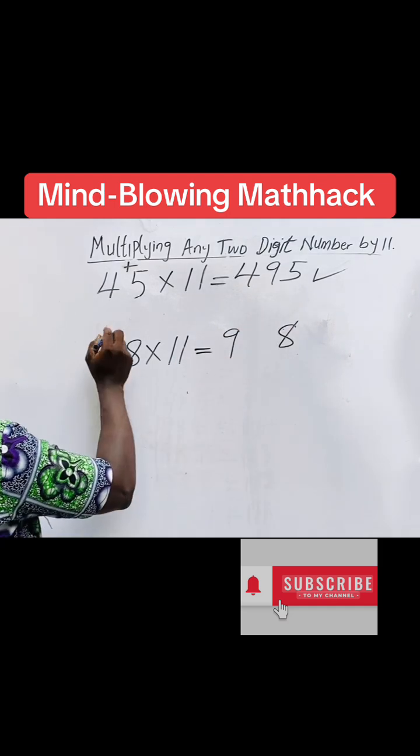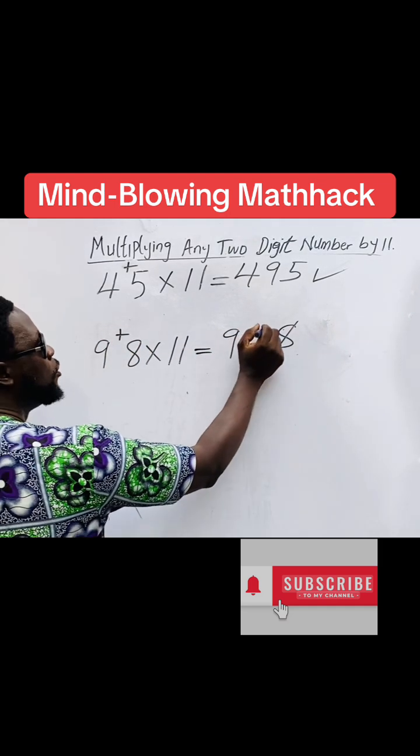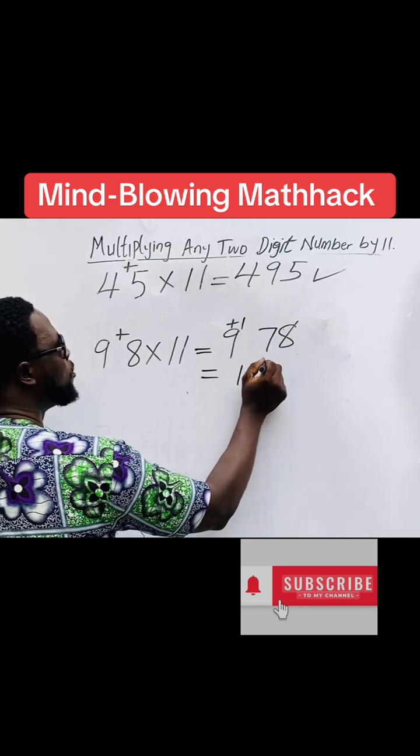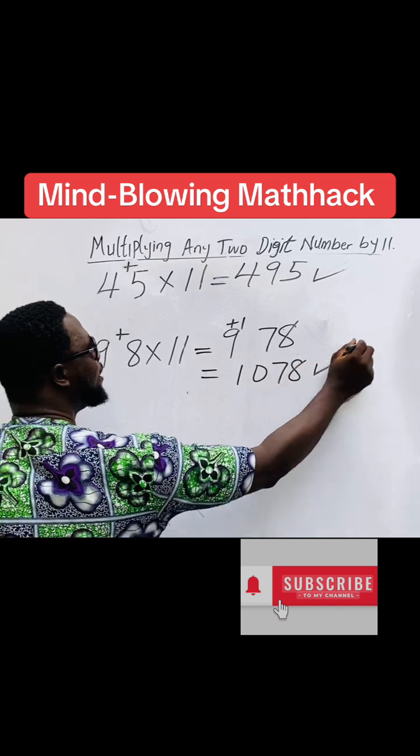So you sum the 9 and 8. You have 17. You write down 7, add 1 to 9, which will give you 10. You have 1078. Correct.